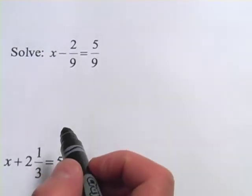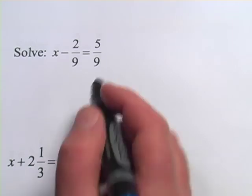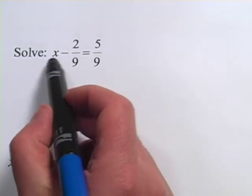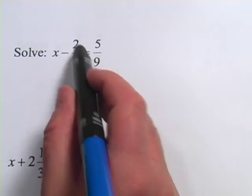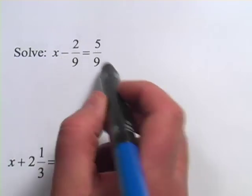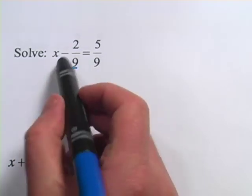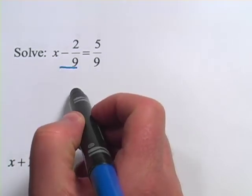Let's try another one. This one looks a little bit harder, but it's not really. It's the same setup. You have a variable that you want to solve for, x. You have some other number here and then an equal sign and another number over there. We want to get rid of this. Now this is a minus 2 ninths.